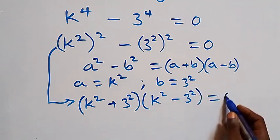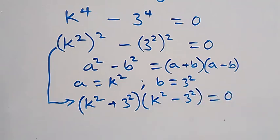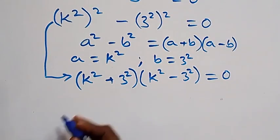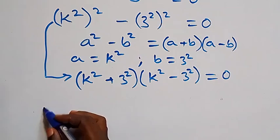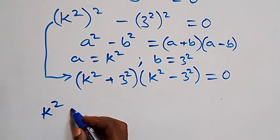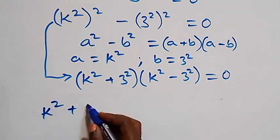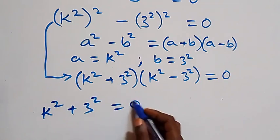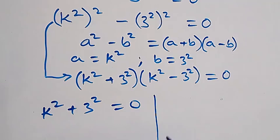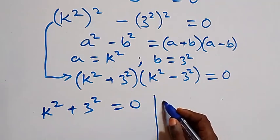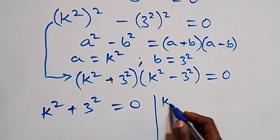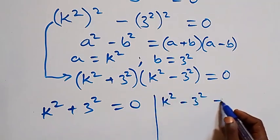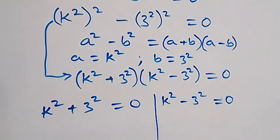This equation now becomes (k² + 3²)(k² - 3²) = 0. From here we have two possible cases: the first is k squared plus 3 squared equals 0, and the second is k squared minus 3 squared equals 0.